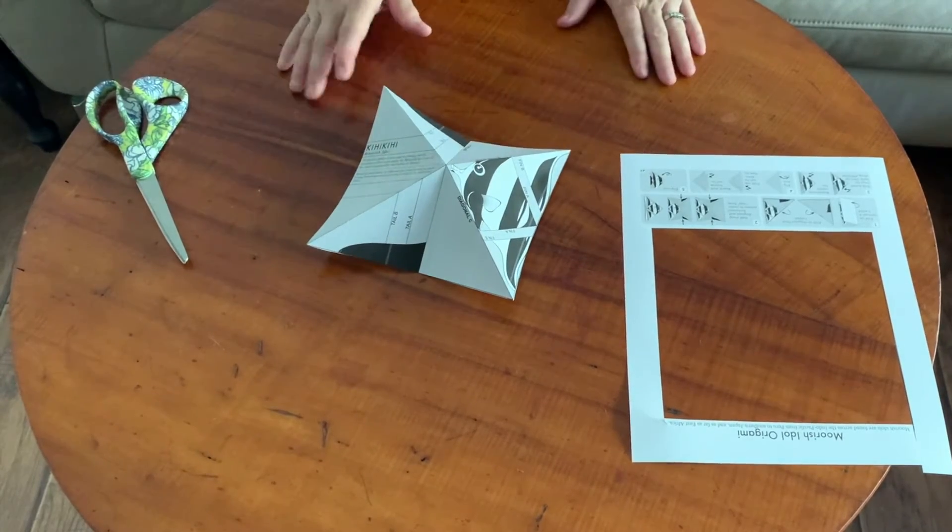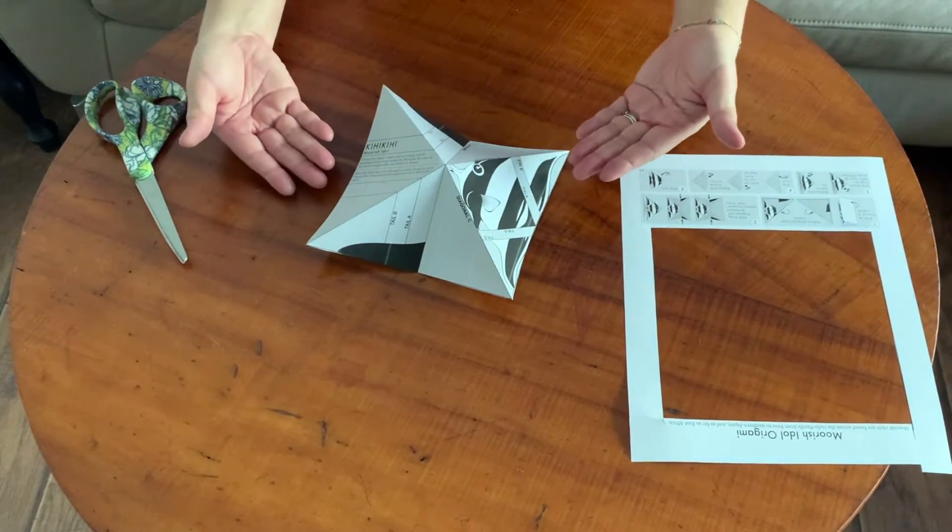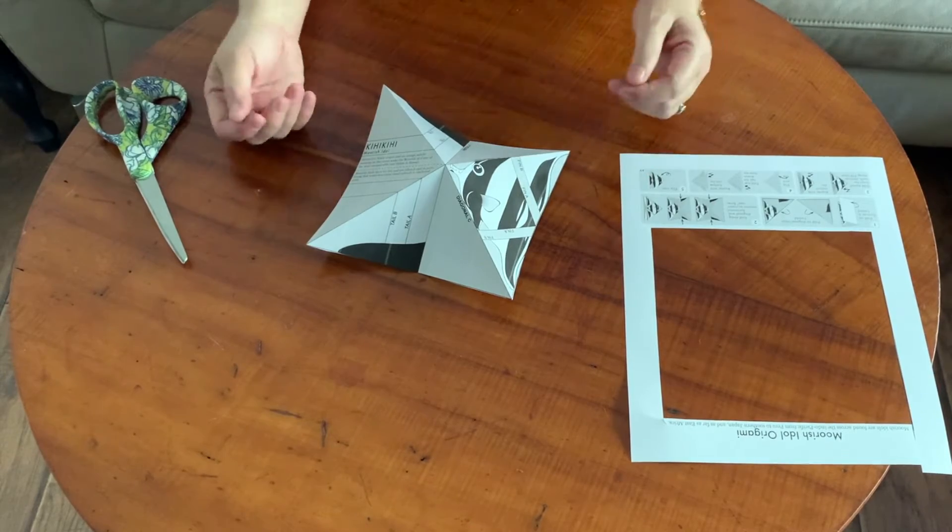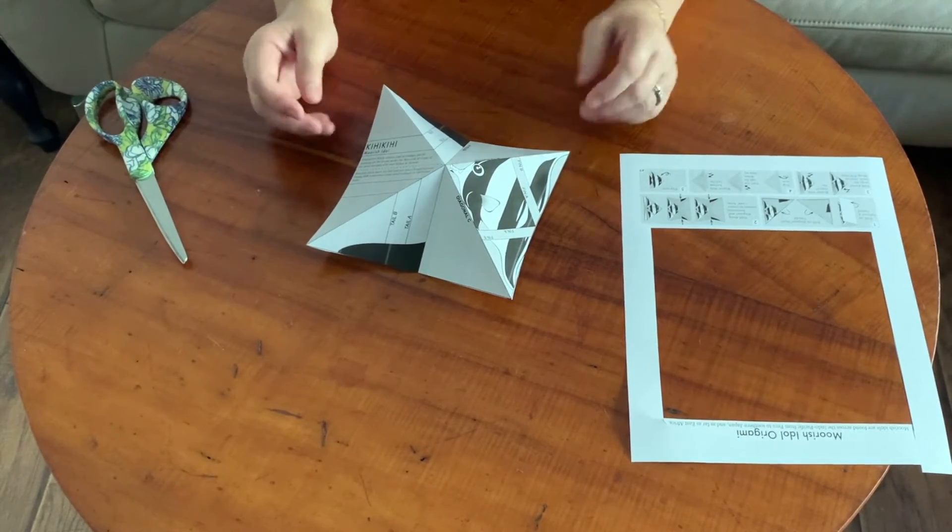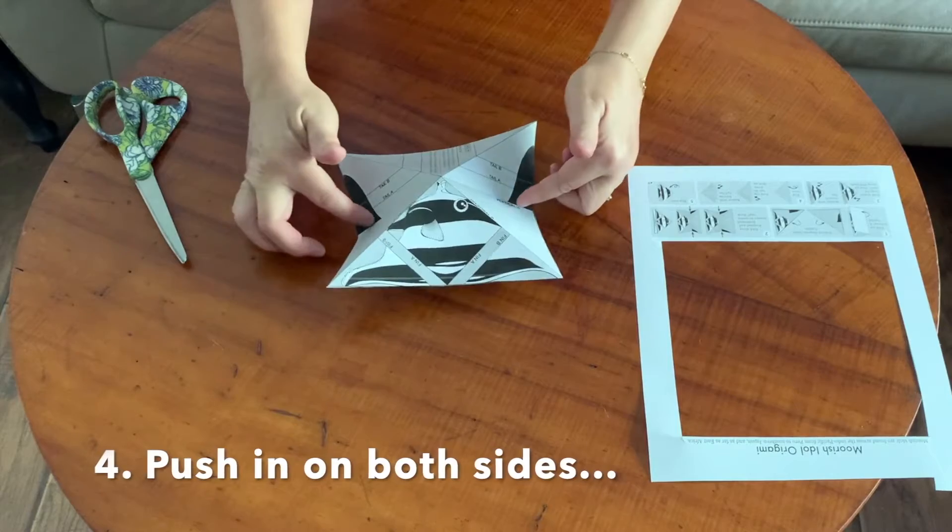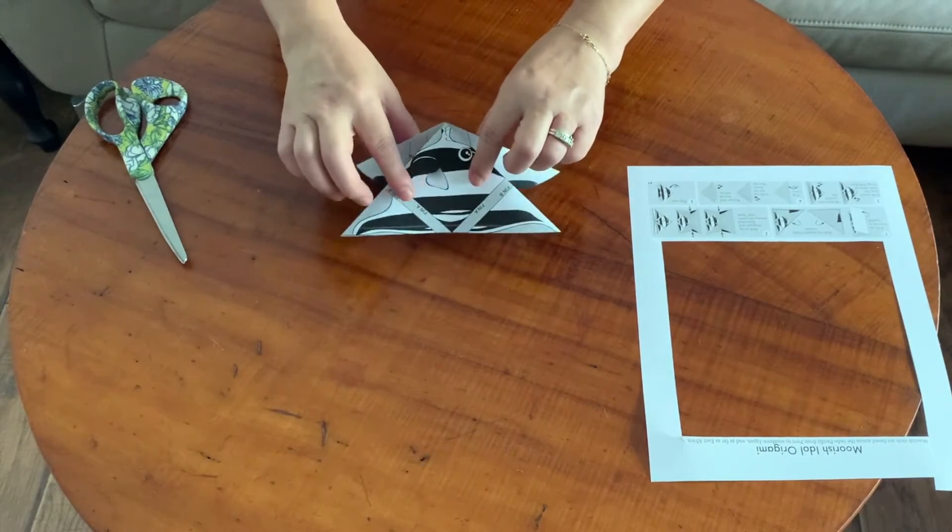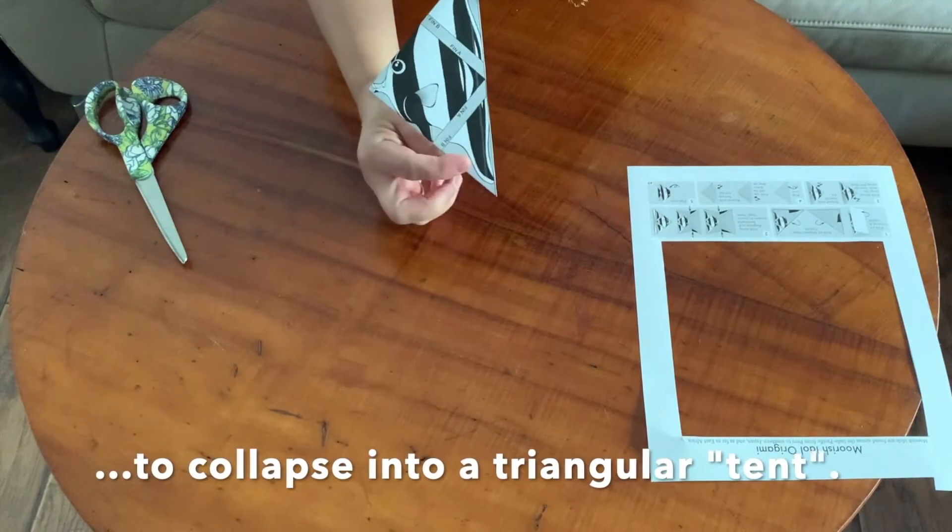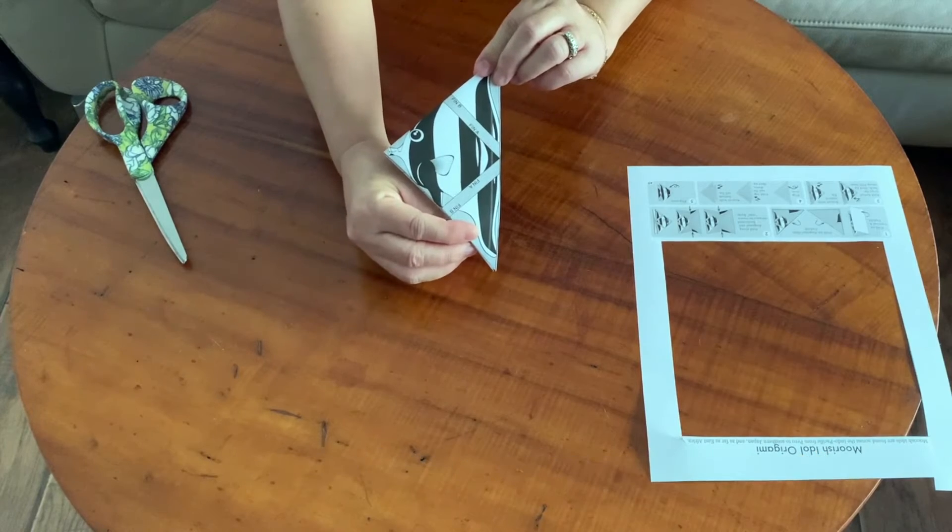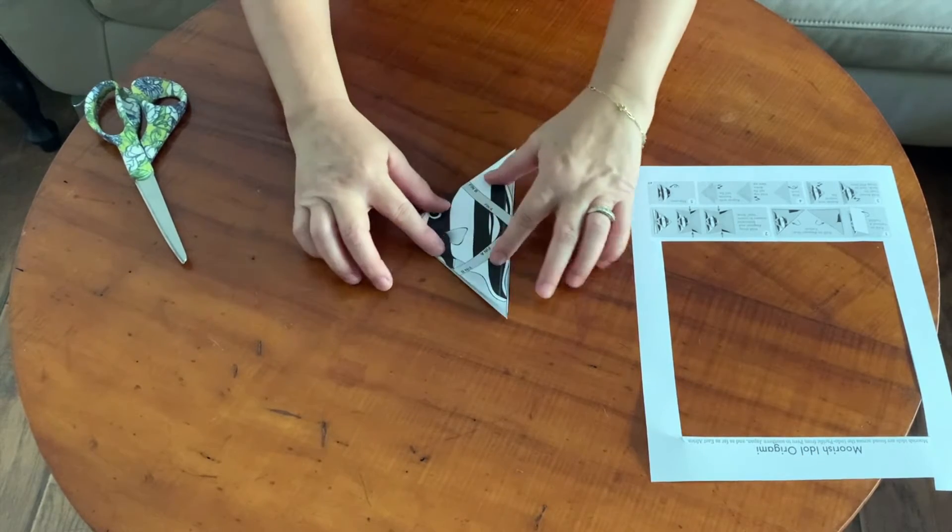Now you see with all of these creases, your Moorish Idol Origami kind of looks like a tent and that's why I like to call it the tent base. So pushing against these two sides, collapse your fish almost like a tent and you can already see your fish taking form.